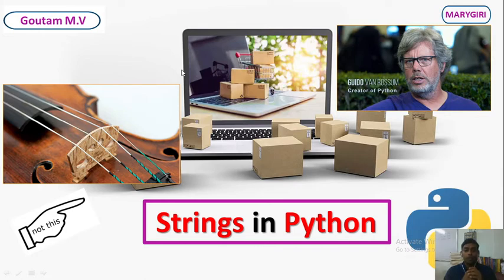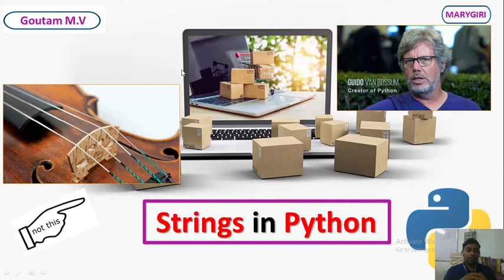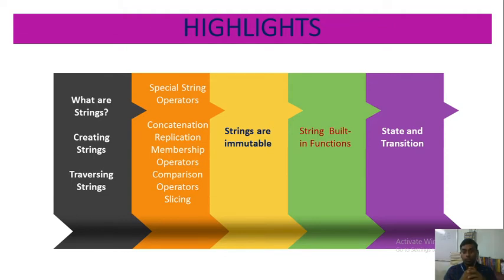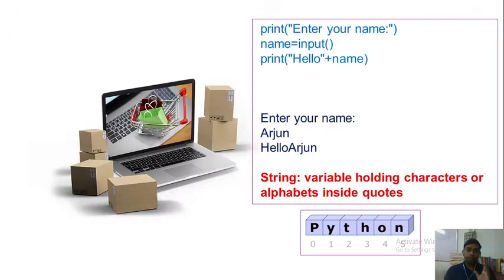Now it's time to look at our next chapter — Chapter 4, Strings in Python. We have already heard of strings, and it is one of the most commonly used data types in any programming language. The highlights of this chapter include: what are strings, creating strings, traversing strings, special string operators like concatenation, replication, membership, comparison, and slicing, then strings are immutable, string built-in functions, and state and transition.